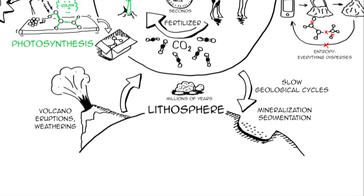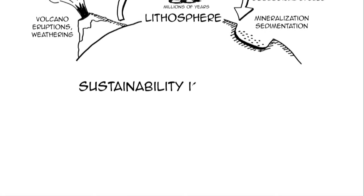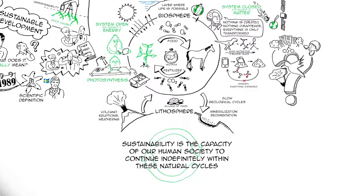So this is what the scientific community agreed upon. This is the world we live in. So what is sustainability? Well, it's actually the capacity of our human society to continue indefinitely within these natural cycles. And sustainable development would be a development towards this state of sustainability.